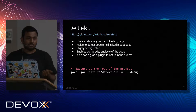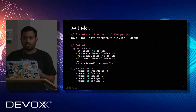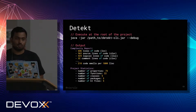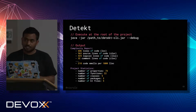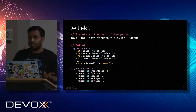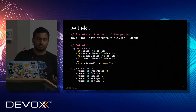When you run Detekt, you run it with 'java -jar detekt.jar --debug' to show more information. It generates a complexity output, project statistics, and a lot of warnings you can cross-check and fix. Detekt is one of the nice tools to have in your arsenal when working only on the terminal side.